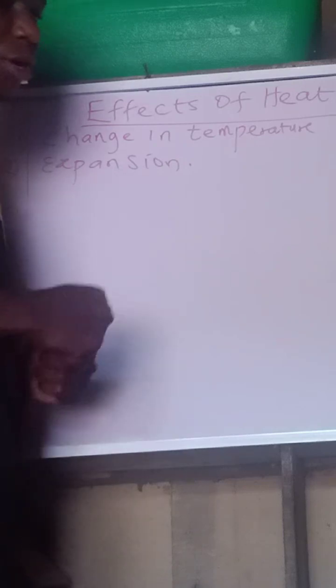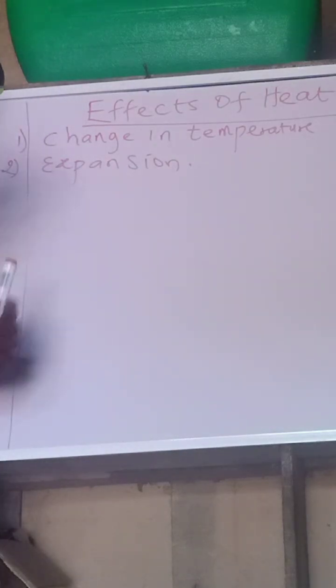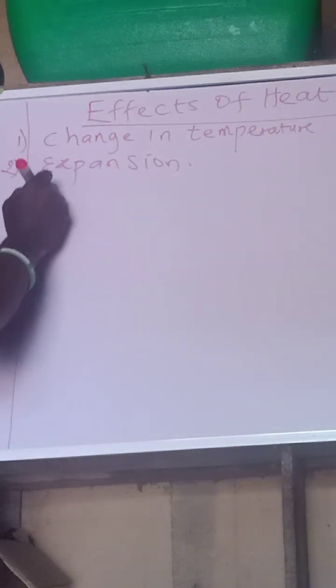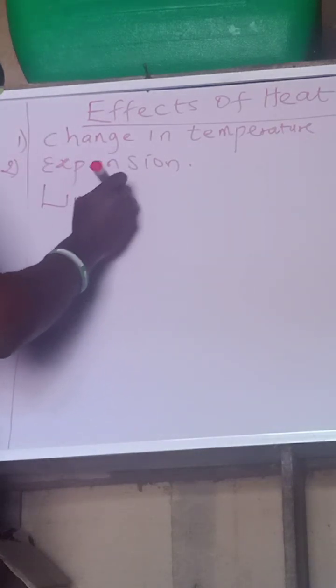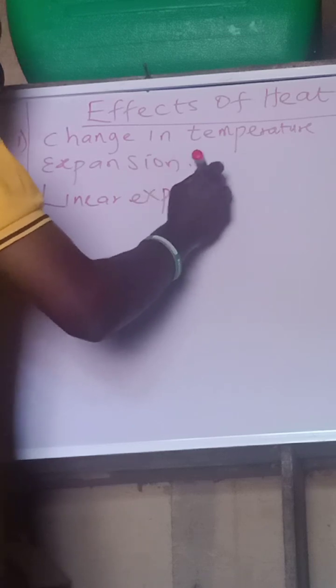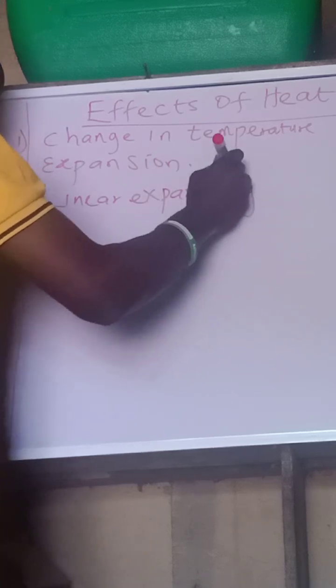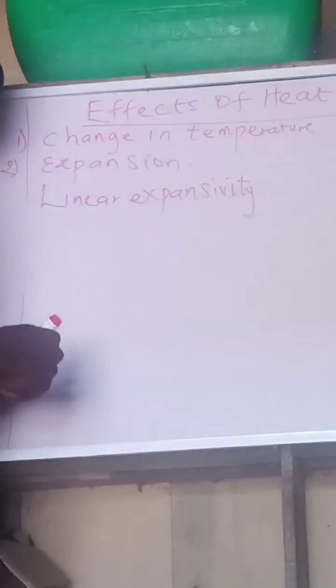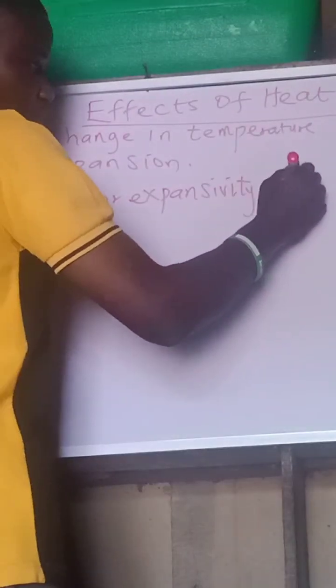I am talking about expansion. If something expands, it can expand in three ways. We have the first form of linear expansivity. Linear expansivity is actually talking about something expanding in one dimension, expansion in one dimension.